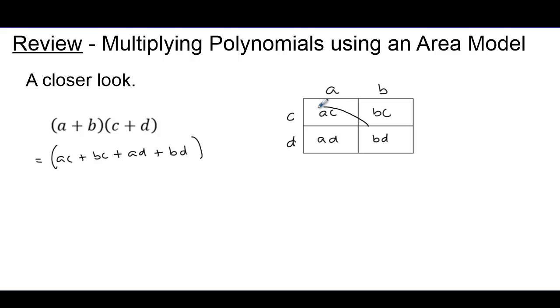If we look at the diagonal product, product meaning multiplication of these two terms inside the area model, AC times BD, and I can rearrange those, multiplication is commutative. And now look what I get when I multiply along the other diagonal. Notice that these diagonal products are equal to each other. And that's an important property of this area model when we multiply binomial factors.